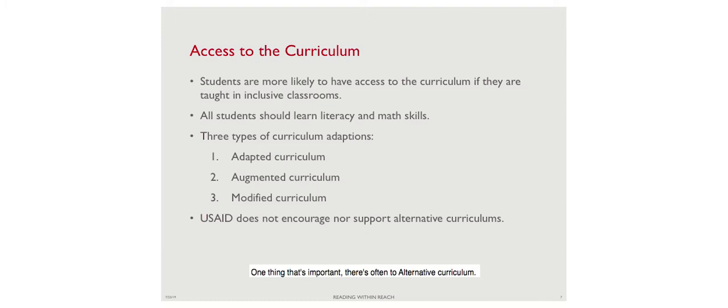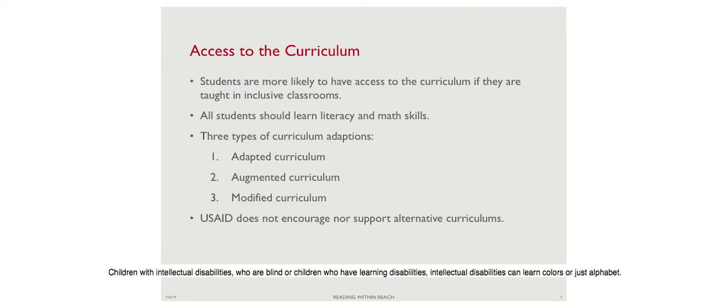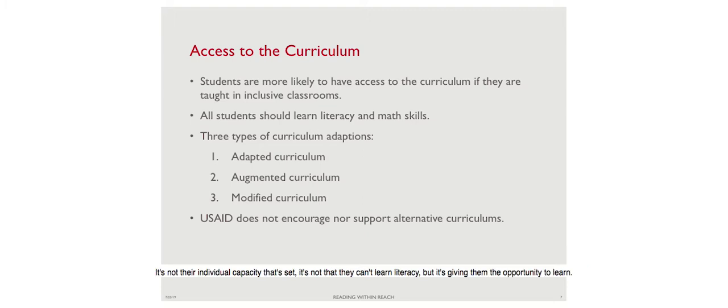There's often also an alternative curriculum, where a child with a disability learns something entirely different. In some countries, deaf children learn a split literacy curriculum over two terms, having half the same curriculum as students without disabilities. Children with intellectual disabilities or learning disabilities might learn only colors or the alphabet - not getting the opportunity to learn full literacy skills. This sets their perceived capacity, but the issue is not their individual capacity - we're simply not giving them the opportunity to learn.